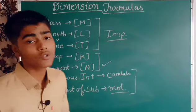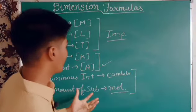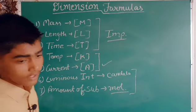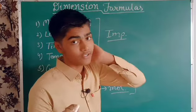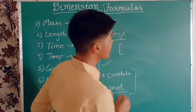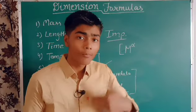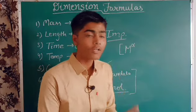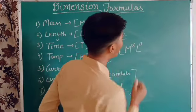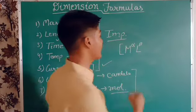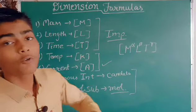So those are the seven basic quantities. The seventh one is not used much in making formulas. Now, for all seven physical quantities there is a general formula. We write it in brackets as M^α L^β T^γ — where α is how many times mass is used, β is how many times length is used, and γ is how many times time is used in that formula.